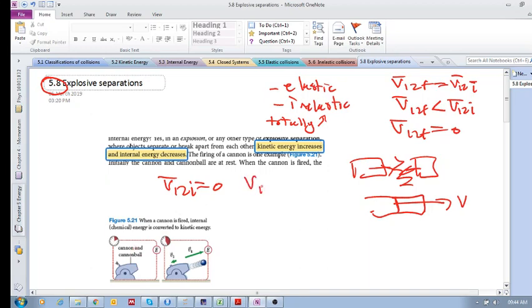So let's see, it says in an explosive separation objects separate or break apart from each other. The kinetic energy increases and the internal energy decreases.